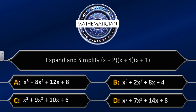Question six: expand and simplify (x plus 2)(x plus 4)(x plus 1). The possible answers are: A equals x³ plus 8x² plus 12x plus 8; B equals x³ plus 2x² plus 8x plus 4; C equals x³ plus 9x² plus 10x plus 6; D equals x³ plus 7x² plus 14x plus 8. This is a bit of a tedious question — I'm going to give you 30 seconds.